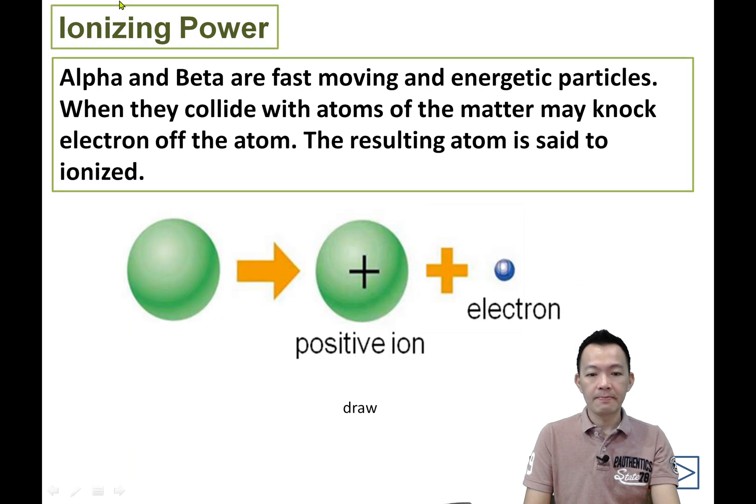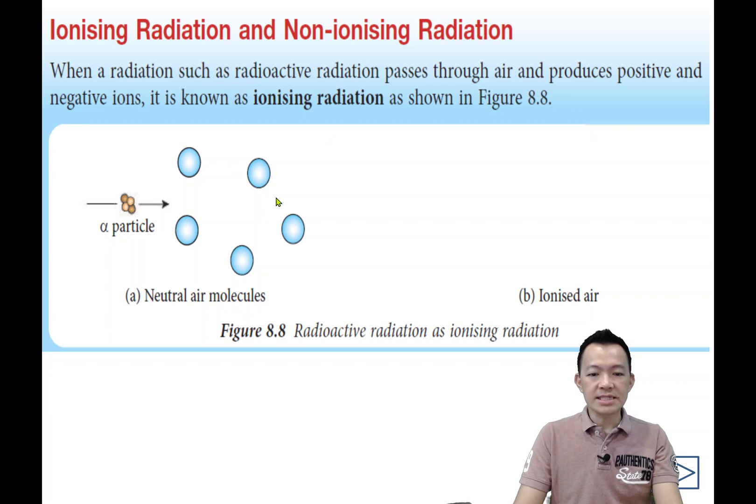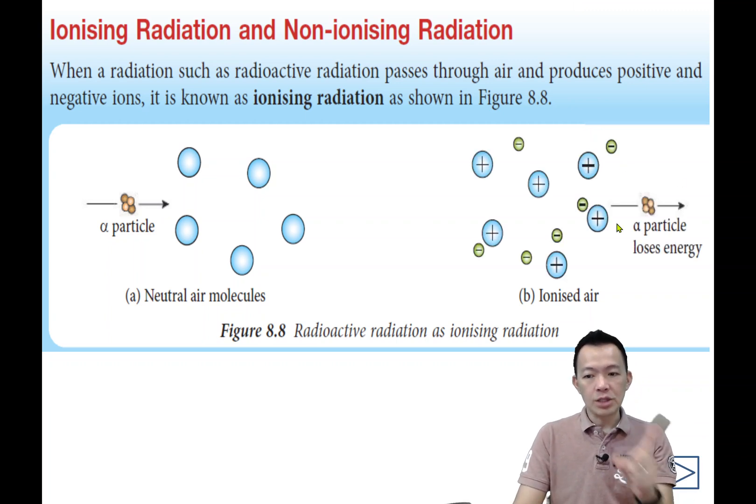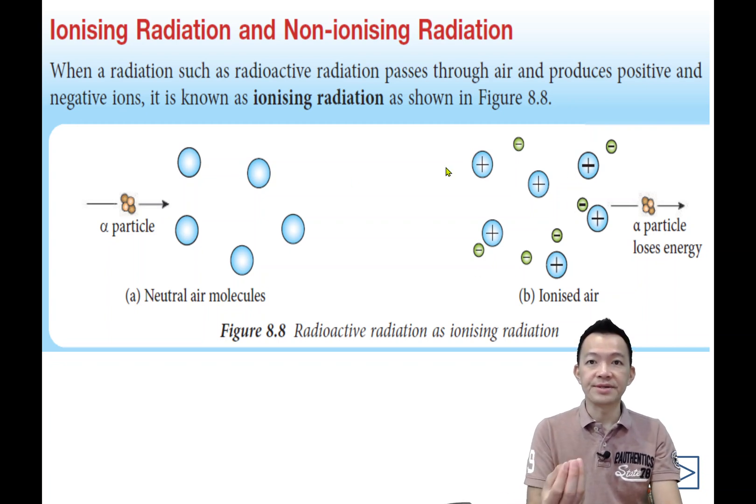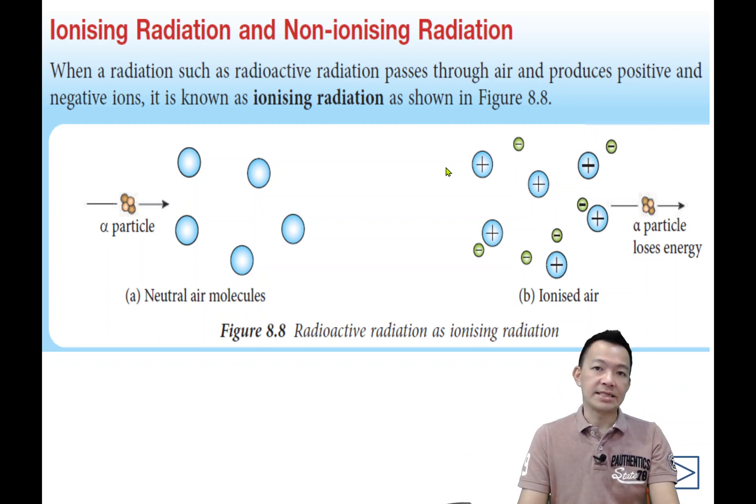So what is meant by ionizing radiation? This type of radiation can create ions. It strikes atoms, the electrons are removed, and they become ions. So this is called ionizing radiation. Now draw on your notes. We have lots of air particles or molecules. Alpha particles collide with air atoms, knocking off electrons, and finally atoms become positive ions and form many positive ions.